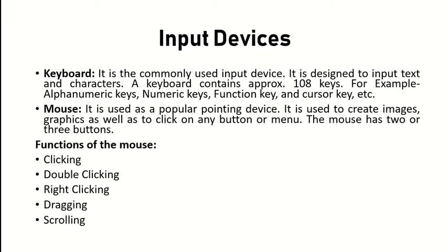The mouse is a pointing device. When you use it, you can click, double-click, select, right-click, drag and drop, or scroll. It provides all these interaction facilities to the user.